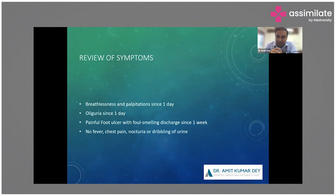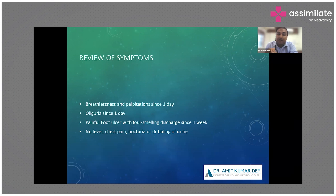Let's review the case again: the patient presented with breathlessness and palpitation for one to two days, and oliguria for one day. In the background there is a painful foot ulcer with foul-smelling discharge for the last one week. Negative history — no fever, chest pain, nocturia, or dribbling of urine — rules out sepsis, as the patient would definitely have had fever if sepsis were likely. Obstructive uropathy symptoms are also ruled out, and the absence of chest pain helps exclude acute MI.